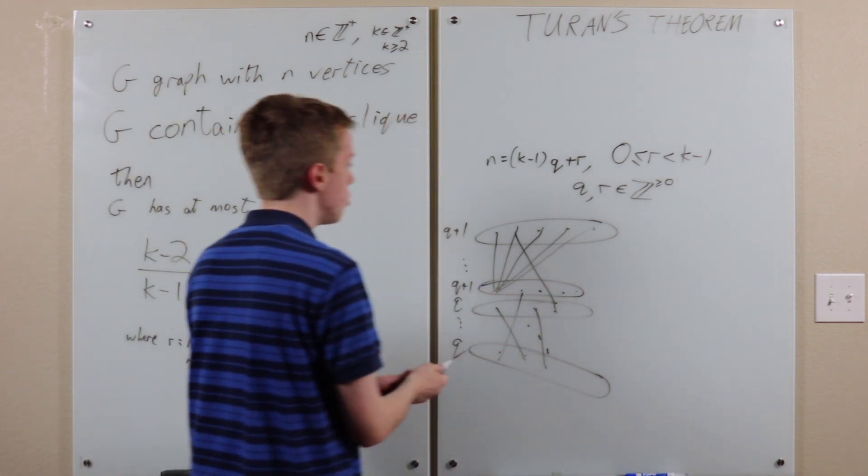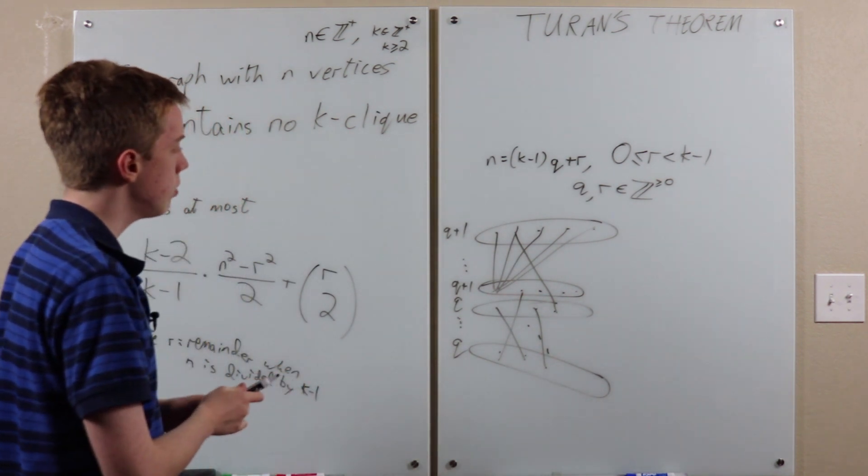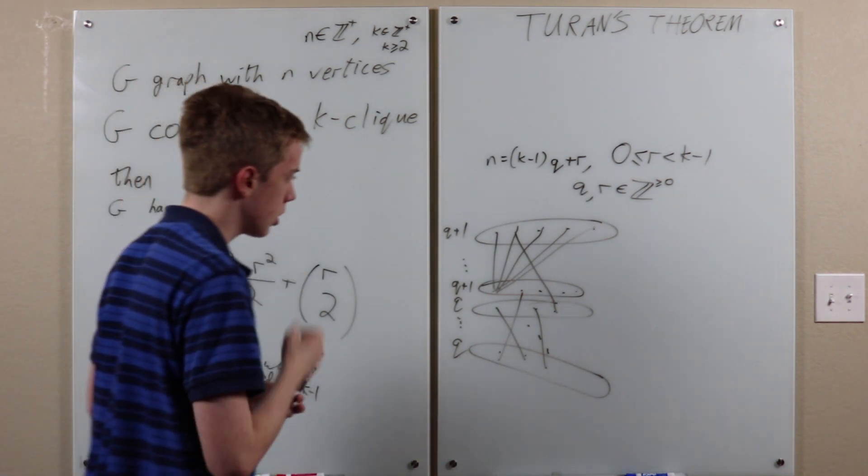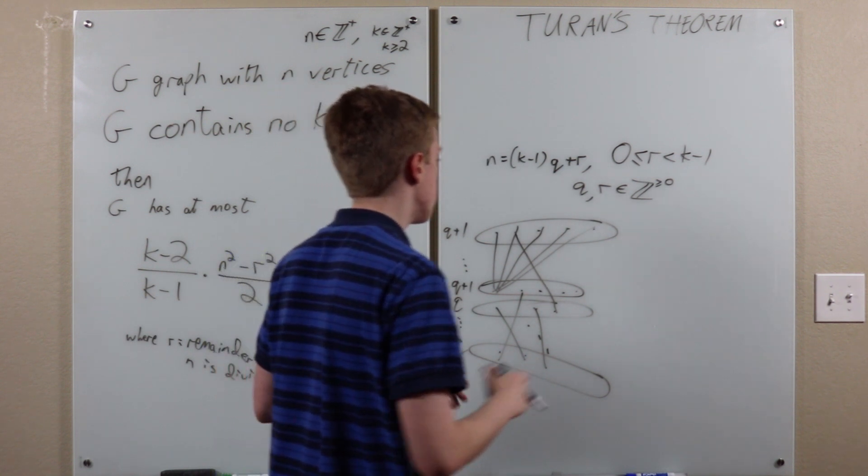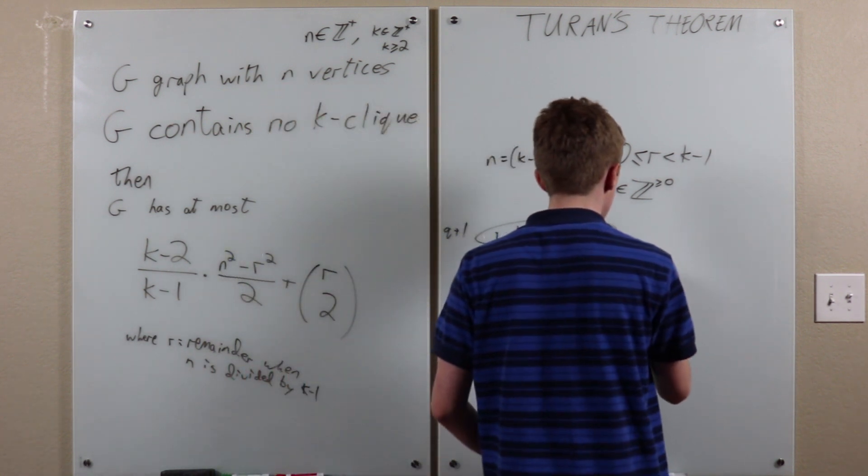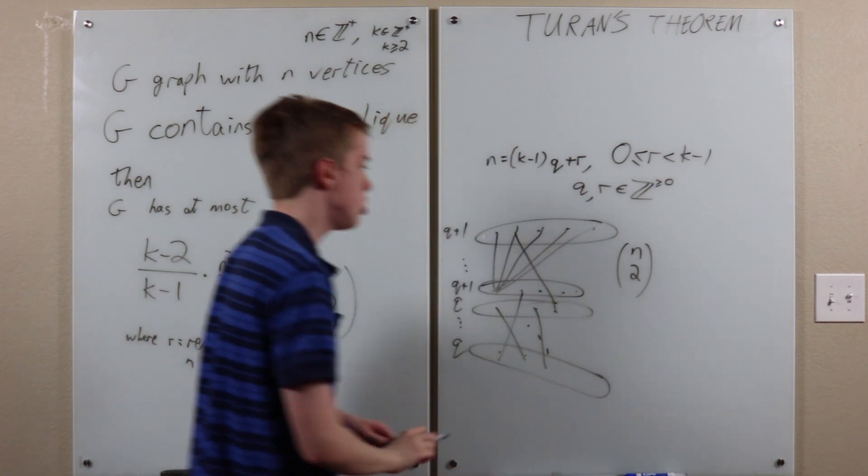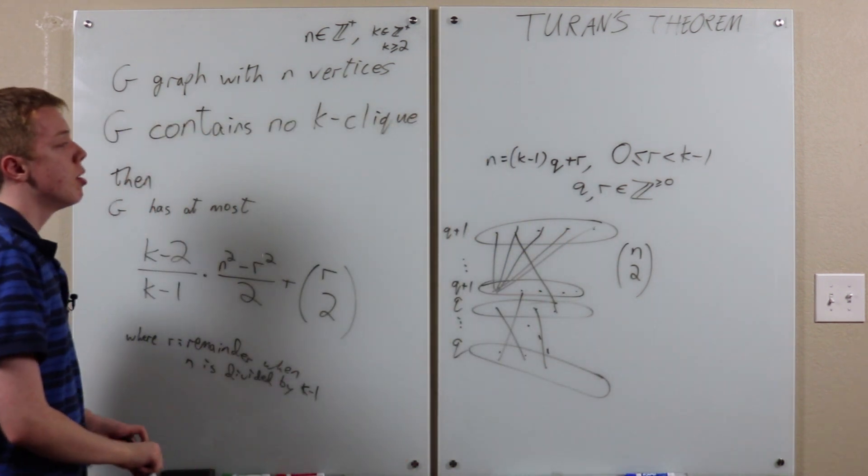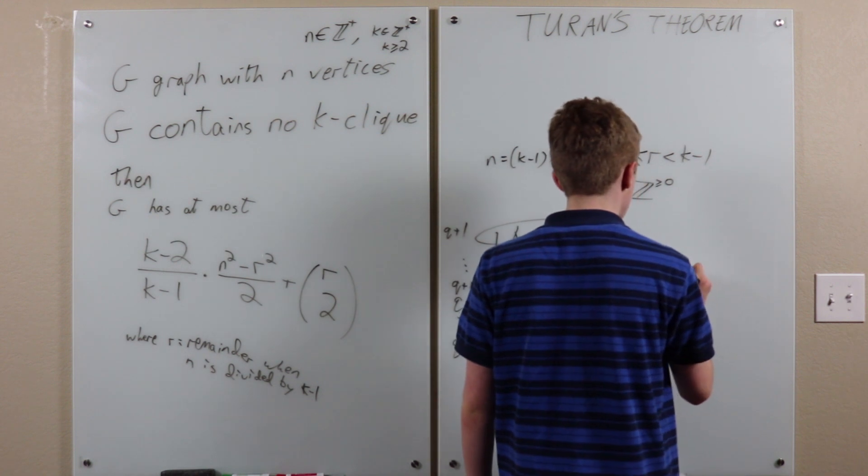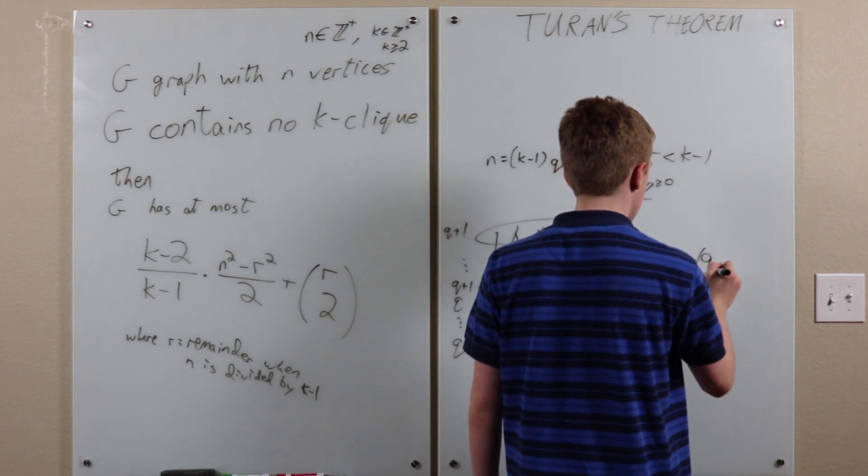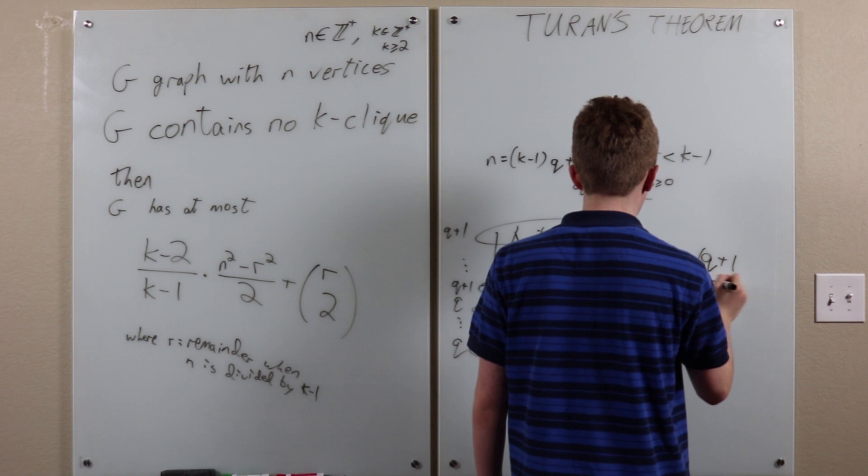So, and now how many edges do we have? Well, let's see. We have n choose two total ways to choose two vertices. But then we have to make sure that we're not choosing two from the same group, to choose for our two endpoints of an edge. So we get this.